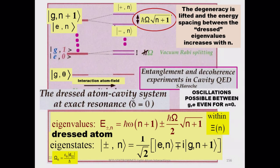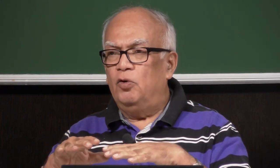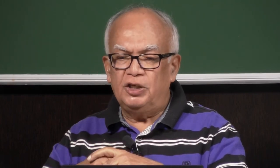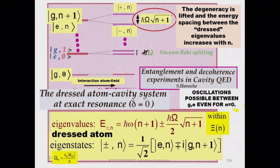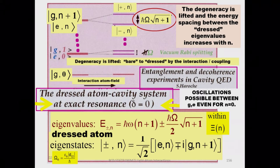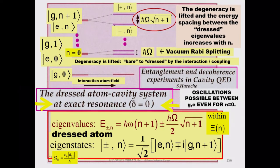This is again the same picture from the Harosh paper available on the internet. You have the entangled states of the dressed atom and the photon when the cavity has N photons. There are two excited states of the atom involved: one with N photons and the other with N+1 photons. These are the two states which get entangled, and you may have Rabi oscillations in these states.